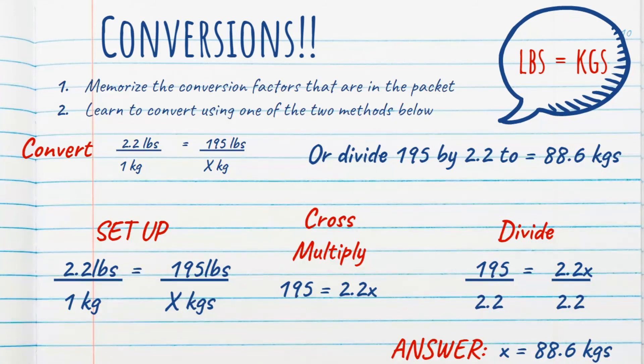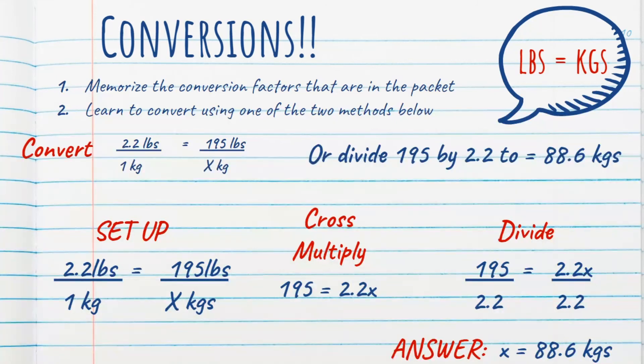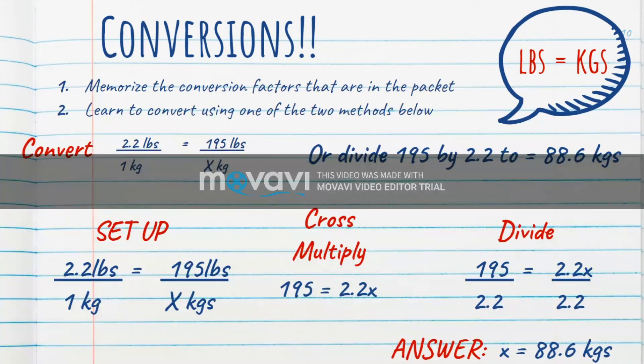We need to know how many kilograms does 195 pounds make. So we cross multiply and we get 195 equals 2.2 X. So we have to get that X to stand alone, and we do that by dividing by 2.2 on both sides. When we do that, our X ends up equaling 88.6 kilograms.